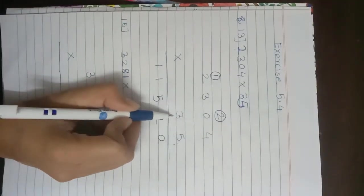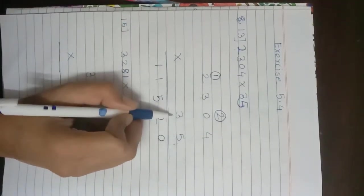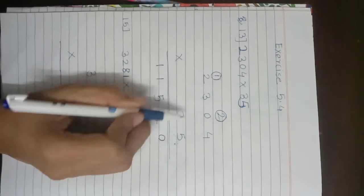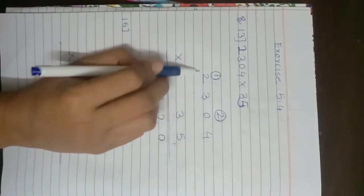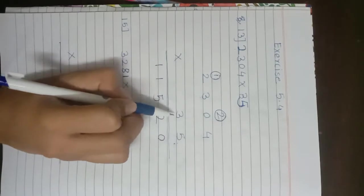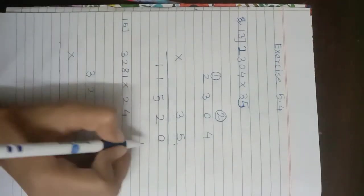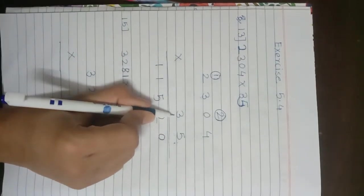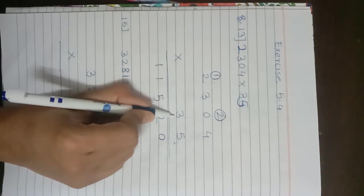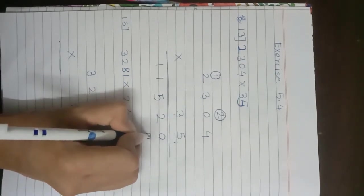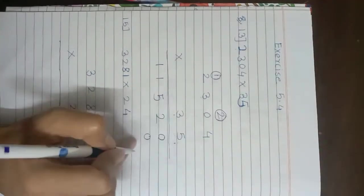The tens digit of the multiplier is 3, so now we multiply the multiplicand by 3. Whenever we multiply by the tens place digit of our multiplier, we must write 0 under the ones place column first.